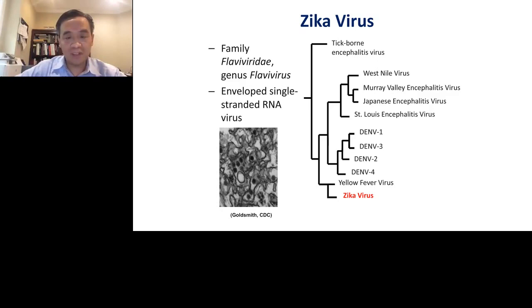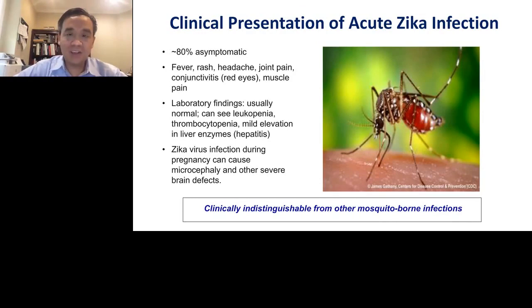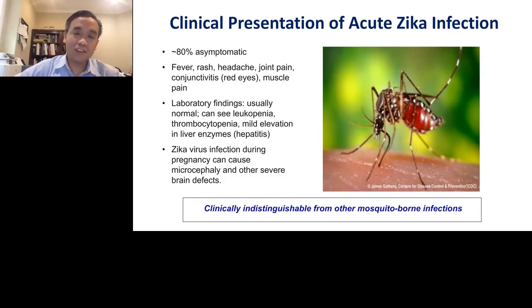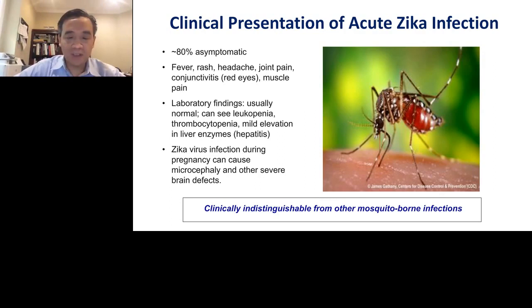The clinical presentation of acute Zika virus infection is quite interesting. Over 80% of infections are thought to be asymptomatic — after a person gets bitten by a mosquito, they may not exhibit any symptoms. In the roughly 20% of cases where a person is symptomatic, you can see fever, rash, headache, joint pain, conjunctivitis, and muscle pain. Laboratory findings are usually normal, although in some cases you can see leukopenia, thrombocytopenia, or mild elevation in liver enzymes.